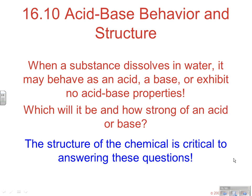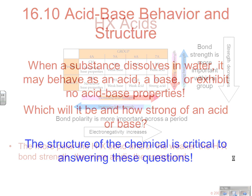When a substance dissolves in water, it may behave as an acid, could behave as a base, or it might exhibit no acid-base properties at all. The question is, which is it going to be, and how strong of an acid or base? Structure of the chemical is really critical to answering these questions. There are some clues as to whether it's going to behave like an acid or base, and how strong — that's really what we're looking at here in Section 10 of Chapter 16.